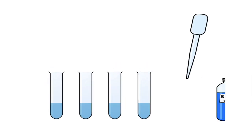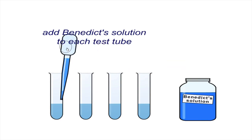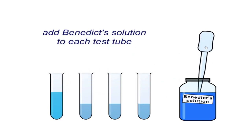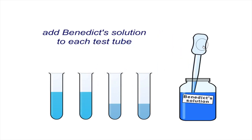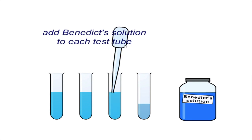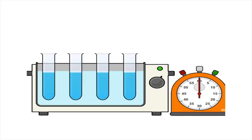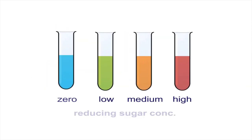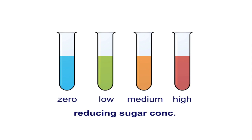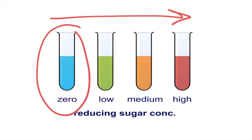The other test you need to learn is the test for reducing sugars. All monosaccharides and disaccharides are actually reducing sugars — the only exception is sucrose. Sucrose, which is made up of glucose and fructose, is a disaccharide that is not a reducing sugar. The Benedict test requires heating in a water bath set at 80 degrees. In the presence of reducing sugars, the color will turn either green, orange, yellow, or red. The more red the color, the more reducing sugar present. Blue is the negative result — no reducing sugar. Green indicates the least amount of reducing sugar, and red indicates the maximum.